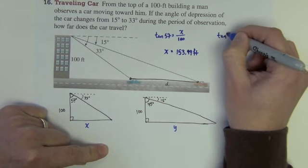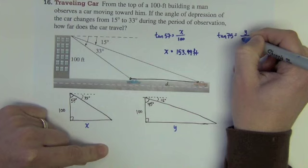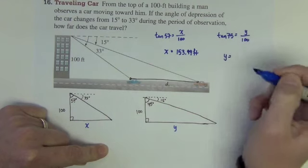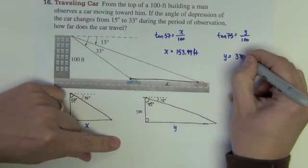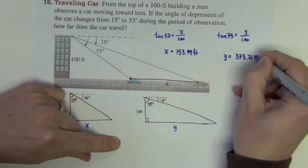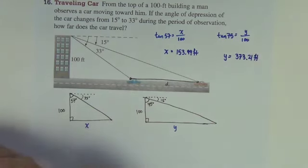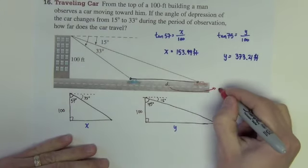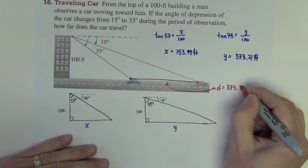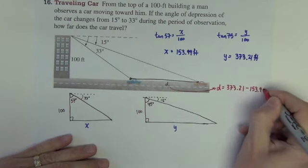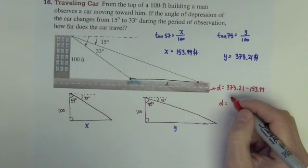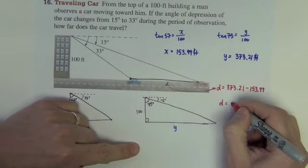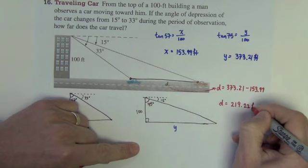I'm also going to do the tan of 75 equals y over 100, so I'm going to multiply the 100 across. 100 tan of 75 is 373.21 feet. Okay, so the distance that we want d is that 373.21 minus 153.99. I get 219.22 feet.